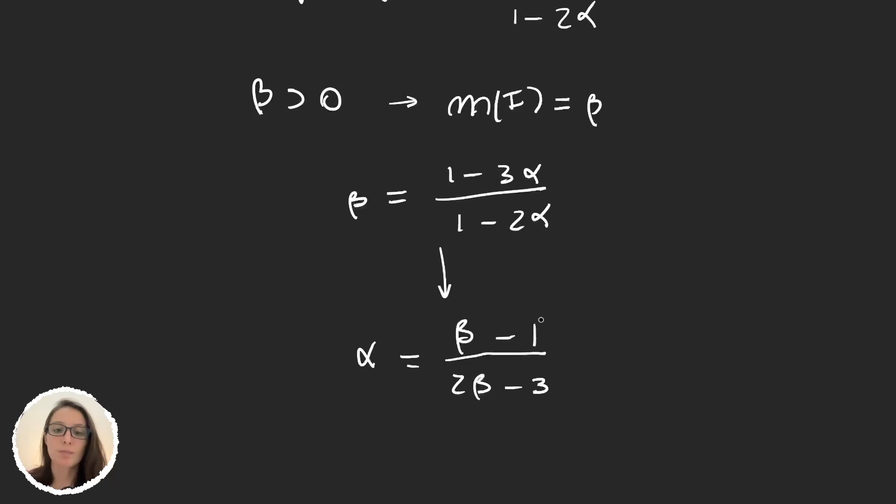So I'm given β. I can calculate this α, and then just use α as the ratio to eliminate sets from [0,1]. And then eventually I would get my original set F with measure β.